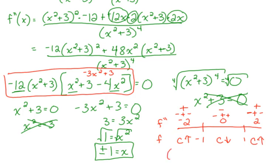So from negative infinity to negative 1 we are concave up; we are concave down from negative 1 to 1; and from positive 1 to infinity we are concave up.